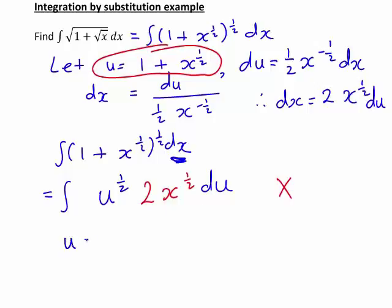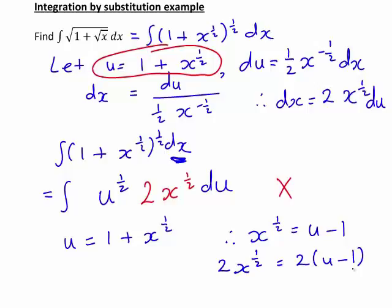But meanwhile, let's rearrange u equals 1 plus x to the half to make x to the half the subject. And we can see that it then just becomes a case that x to the half is actually u minus 1. Now in our expression we currently have 2x to the half. So that must just be two lots of u minus 1. So we can now fix the problem here by substituting in 2(u minus 1) in the place of the 2x to the half, which was the part that made this incorrect.